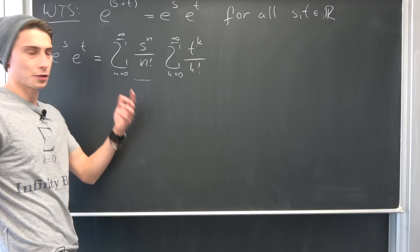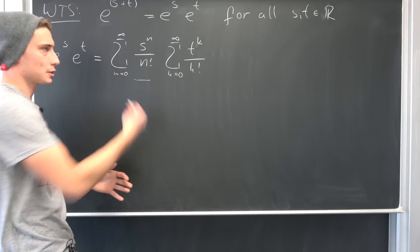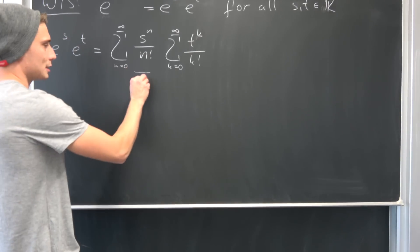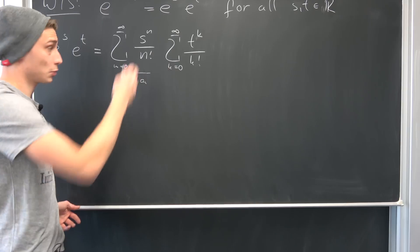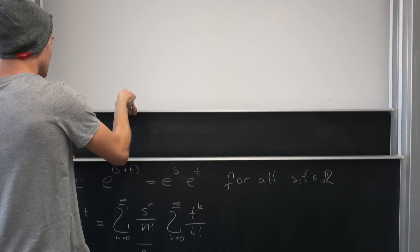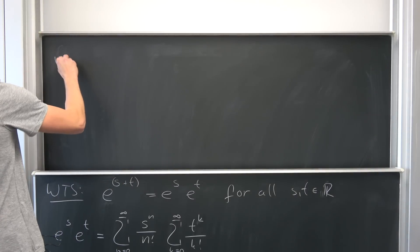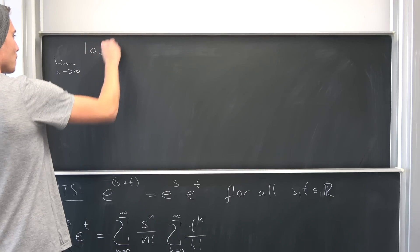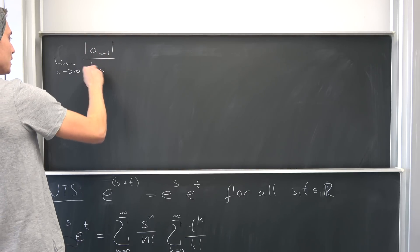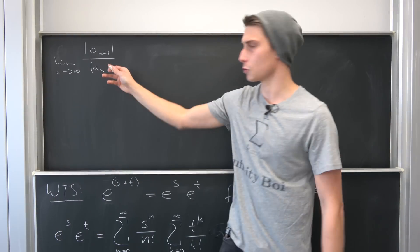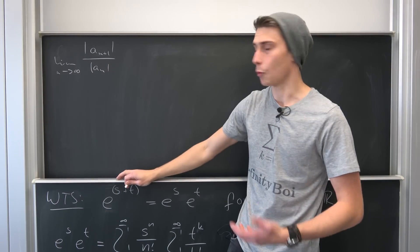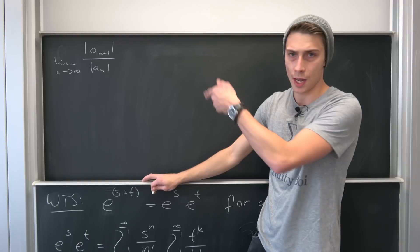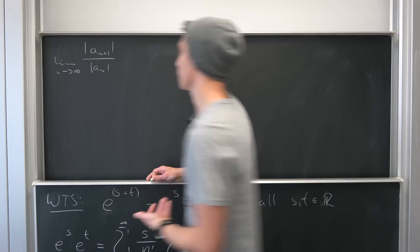This series is absolutely convergent, but we have to test it. Let's say the general term is our a_n, and we have the ratio test telling us that the limit as n approaches infinity of the absolute value of a_{n+1} over the absolute value of a_n — if this is going to be less than 1, then it converges absolutely. So let's plug a_{n+1} and a_n in and see what we get.